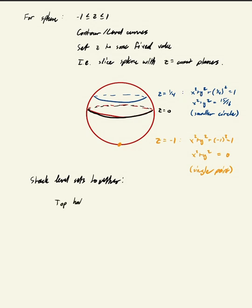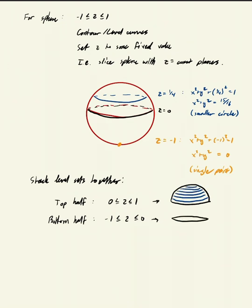Now, stack these level sets together. The top half of the sphere, the top hemisphere, is for values of z between zero and one, and the bottom half is for values of z between minus one and zero. We glue these together to create the entire sphere, but look at these two pieces by themselves - they're just two disks.